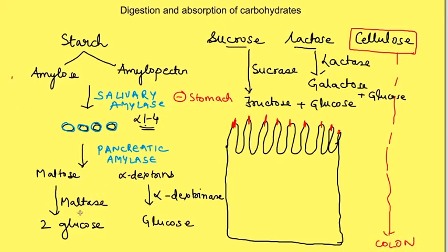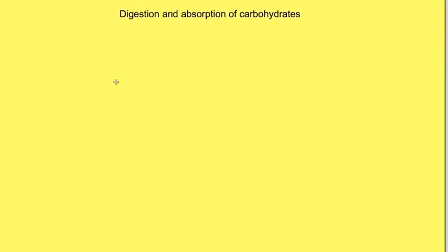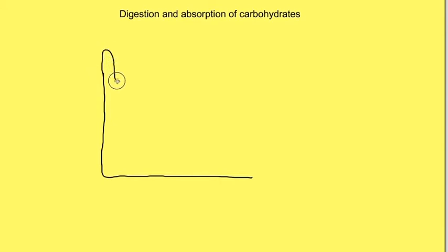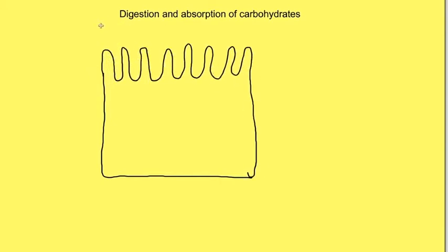Maltase, alpha-dextrinase, sucrase, and lactase enzymes are present on the membrane of the enterocytes. Once monosaccharides are formed, they are absorbed by the enterocytes through different transporters present on the apical and basolateral membranes. The monosaccharides that need to be absorbed are glucose, galactose, and fructose, since these are the ones formed by digestion of the disaccharides.